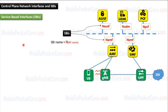In summary, service-based interfaces are introduced in 5G networks as a way of communication between Control Plane network functions. Each network function has its own service-based interface, and any other network function in the Control Plane can use this interface to communicate with it. Thank you and see you in the next lesson.